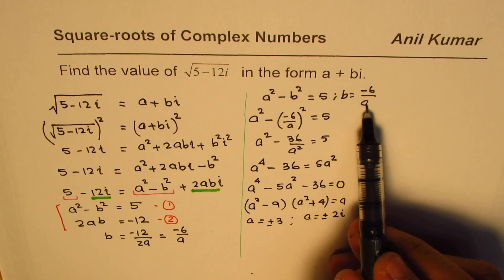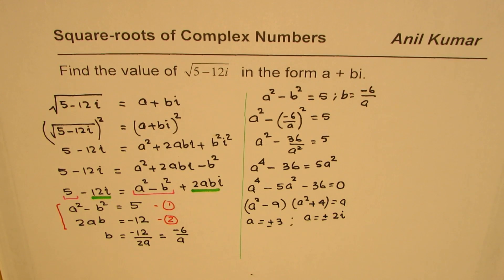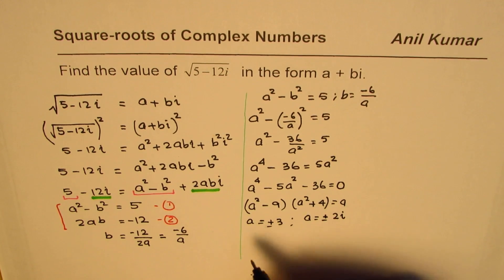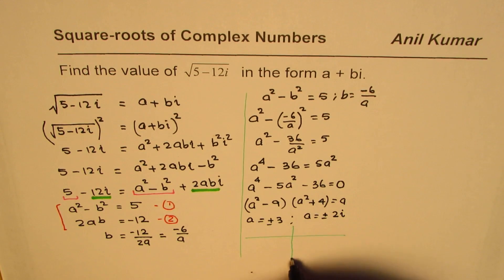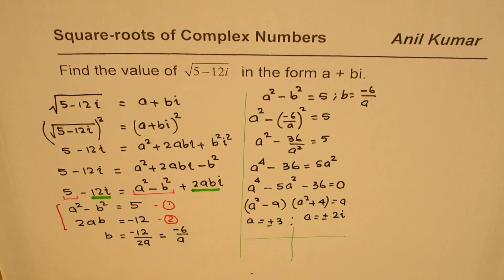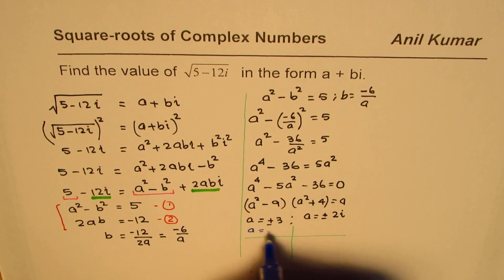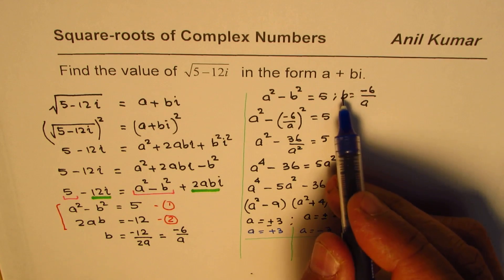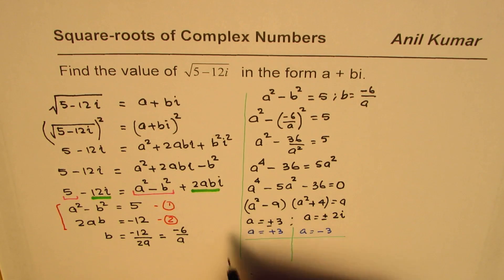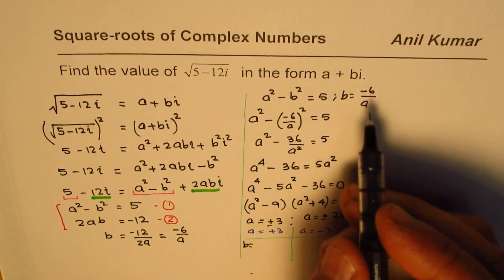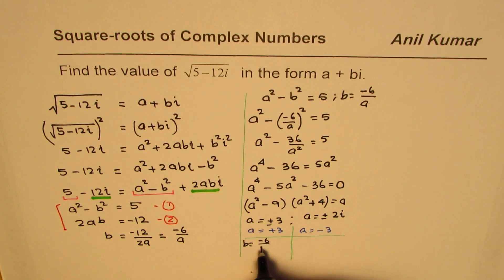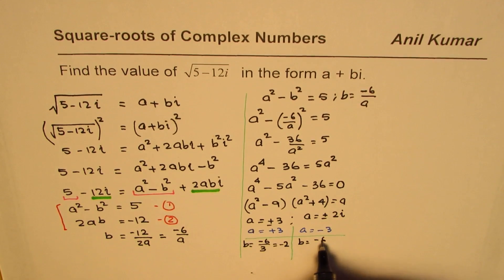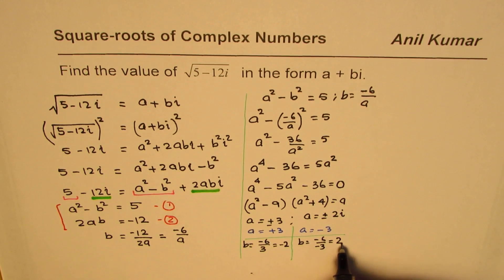We know b equals minus 6 over a. Let's take the real values of a: plus or minus 3. If a equals plus 3, then b equals minus 6 divided by 3, which is minus 2. If a equals minus 3, then b equals minus 6 divided by minus 3, which is plus 2.